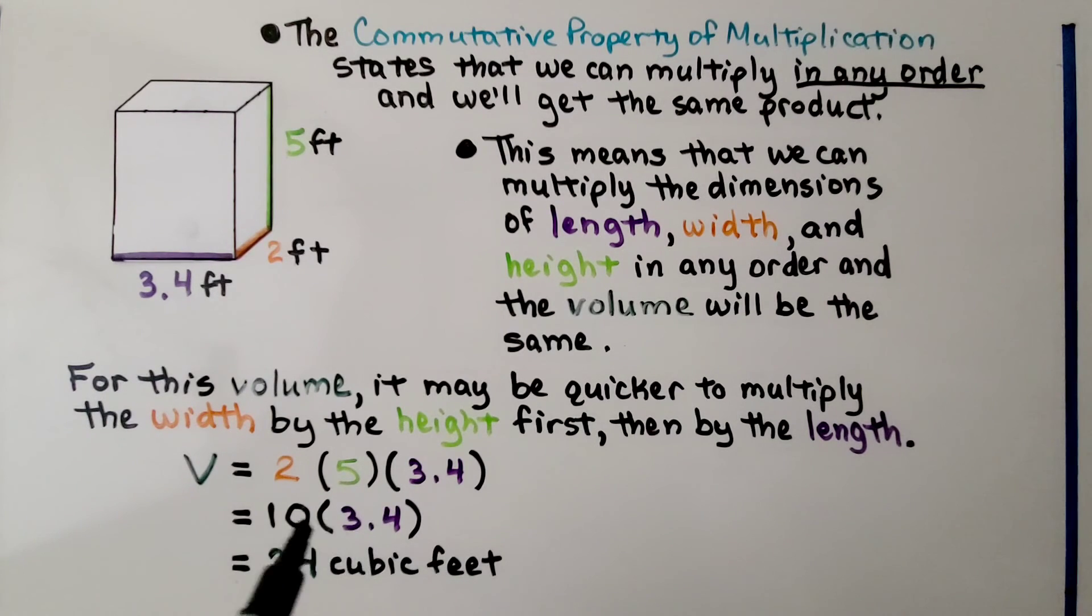We have three and four tenths. When we multiply this decimal by ten, we just move the decimal point to the right. We have thirty-four cubic feet.